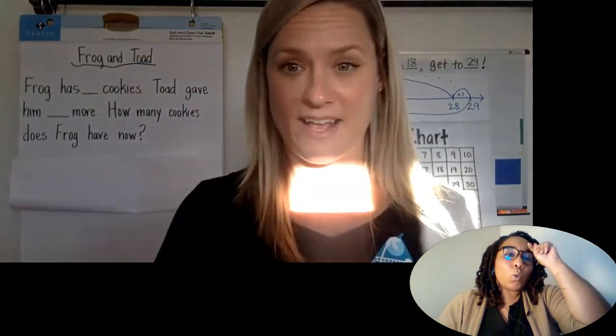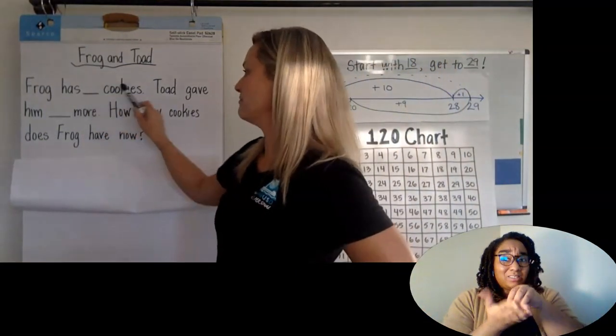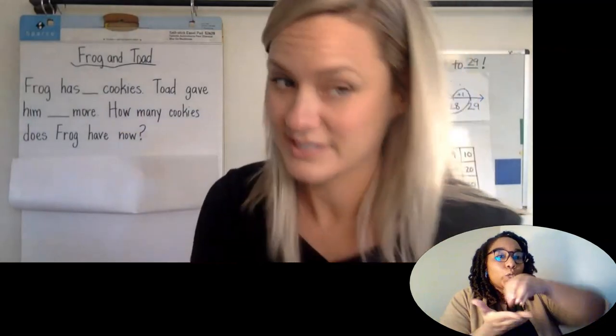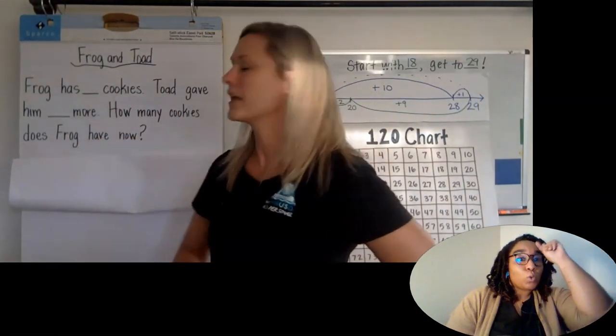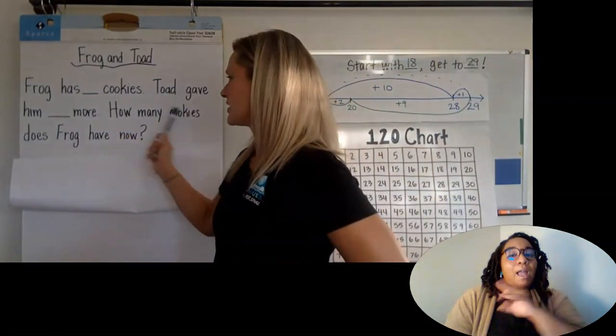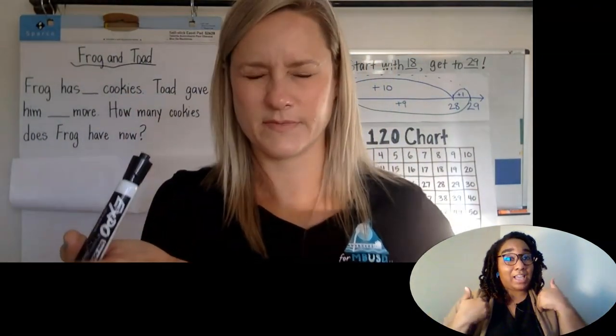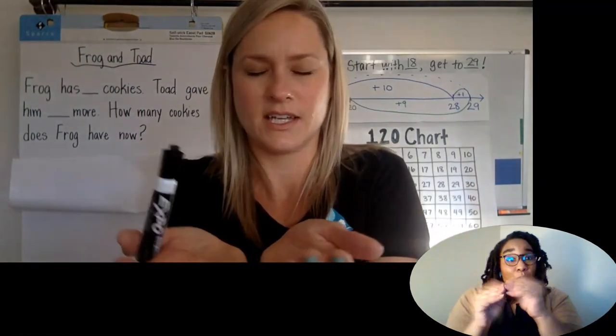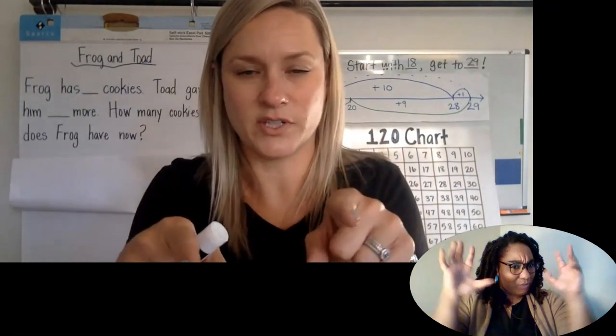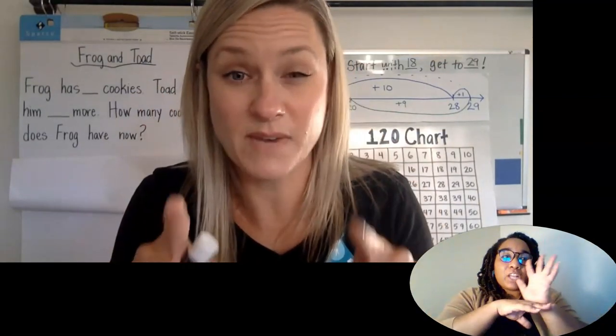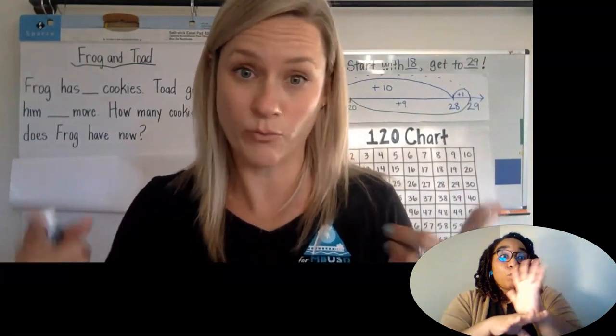So frog has some cookies. All right. Can you imagine frog with some cookies? We know he likes to eat, right? Frog has cookies. Toad's a good friend. You know, he says, I'm going to give you some more. So toad gave him more. Now, how many cookies does frog have now? Okay. So let's stop to imagine it. Ready? Frog has some cookies. Toad gives them some more because toad's a good friend. And we have to figure out how many cookies frog has now. Do you have the picture in your mind? If you don't, you need to hit pause and get that picture in your mind. It's so important to imagine the story. That's the number one thing we have to do with story problems. We must stop to imagine so we understand what we're solving for.